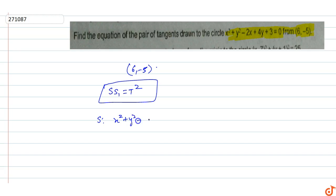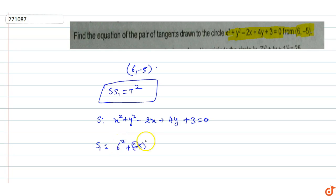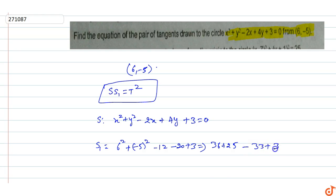Here S is the equation of the circle: x² + y² - 2x + 4y + 3 = 0. S1 is the value of S at the given point (6, -5): 6² + (-5)² - 2(6) + 4(-5) + 3 = 36 + 25 - 12 - 20 + 3, which equals 32. Wait — 36 + 25 - 12 - 20 + 3 = 32, but the speaker computes it as 61 minus 30, giving S1 = 31.